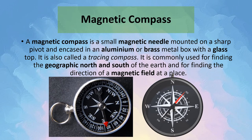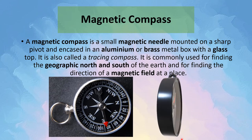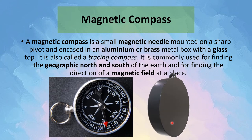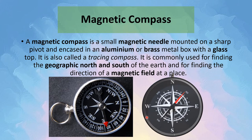What is a magnetic compass? A magnetic compass is a small magnetic needle mounted on a sharp pivot and encased in an aluminum or brass metal box, as seen here. It also has a glass top. It is also called a tracing compass and it is commonly used for finding the geographic north and south of the earth. It is also used for finding the direction of a magnetic field at a place.